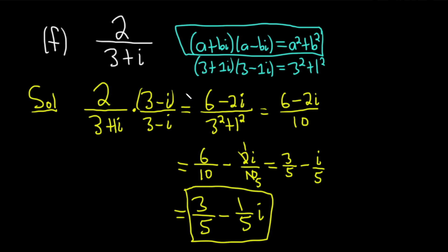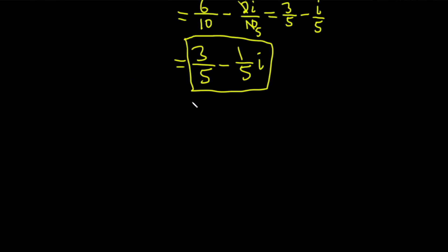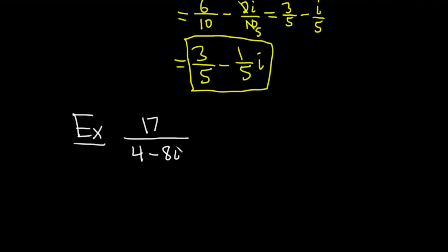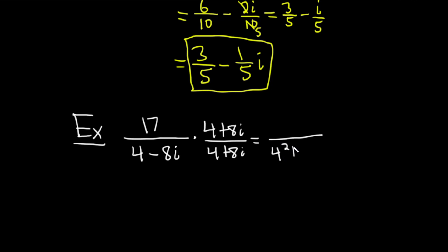Just to make sure you've got it, if you had 17 over (4 minus 8i), the conjugate would be (4 plus 8i), and you'd multiply by (4 plus 8i) over (4 plus 8i). On the bottom, it would be 4 squared plus 8 squared, and on the top you'd distribute and go from there. Same procedure.